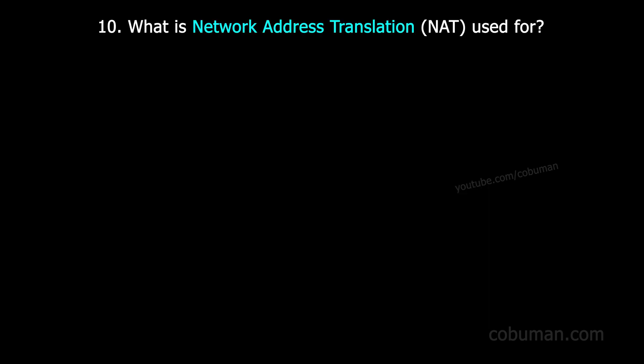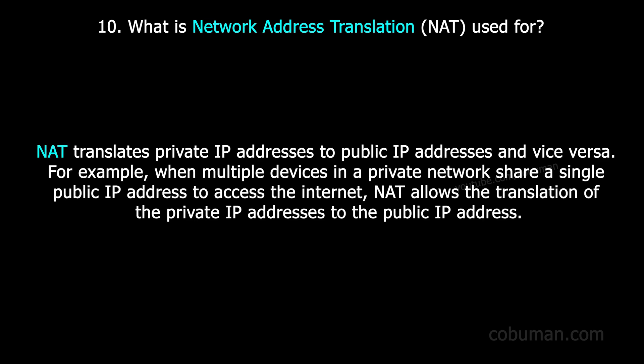Question number ten: what is Network Address Translation used for? NAT translates private IP addresses to public IP addresses and vice versa. For example, when multiple devices in a private network share a single public IP address to access the internet, NAT handles the address translation.